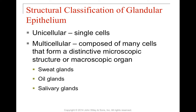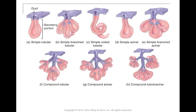The glandular epithelium can be either unicellular or multicellular. Unicellular would be comprised of single cells; multicellular, obviously, comprised of many cells. Some examples of multicellular organs would be sweat glands, oil glands, salivary glands, et cetera.